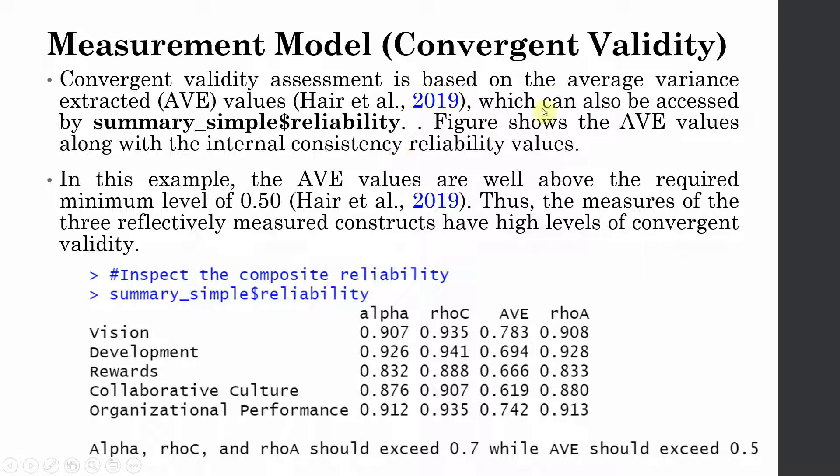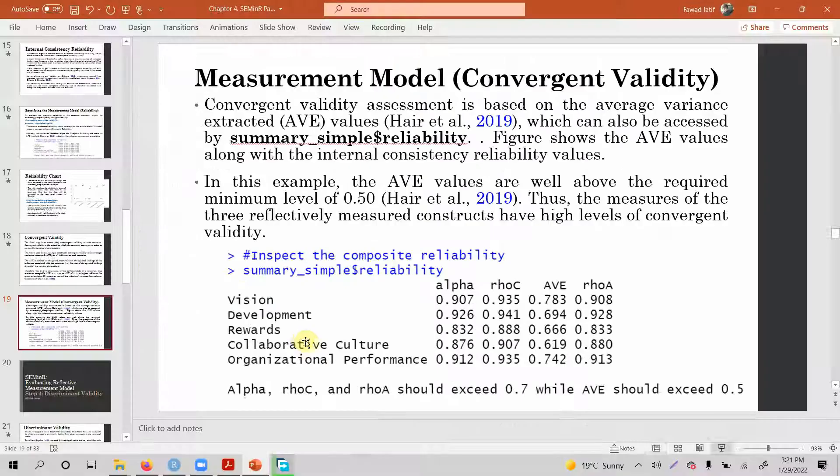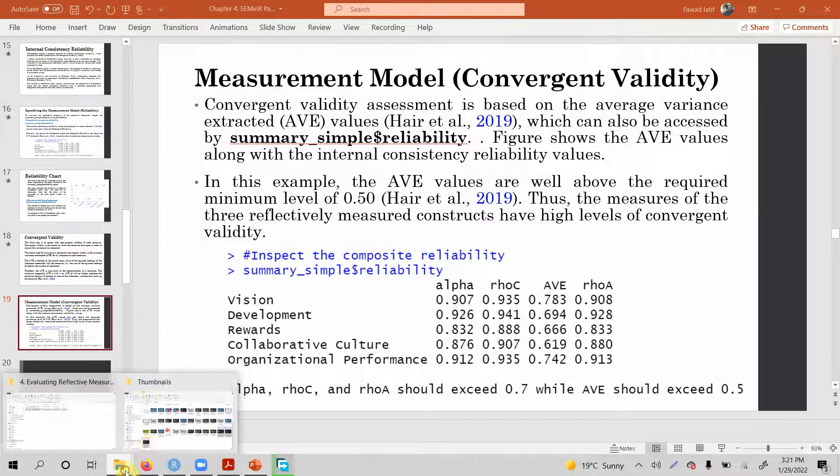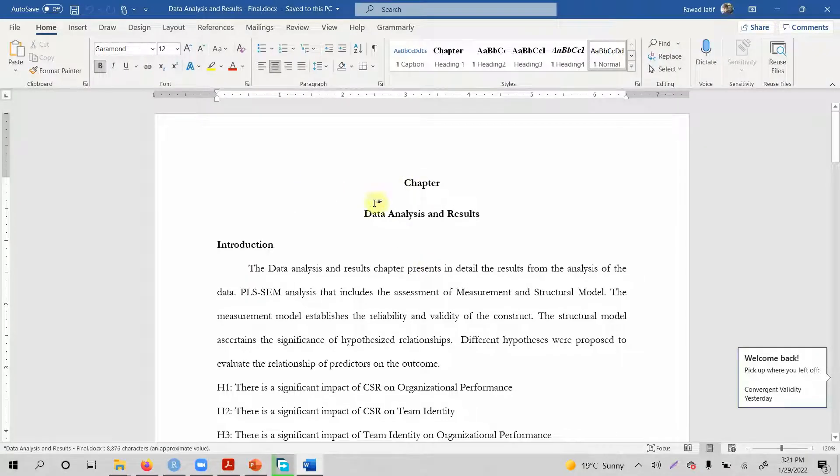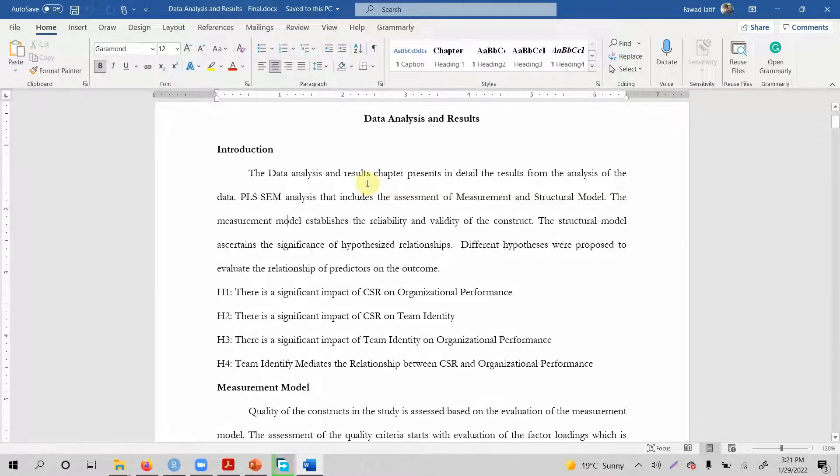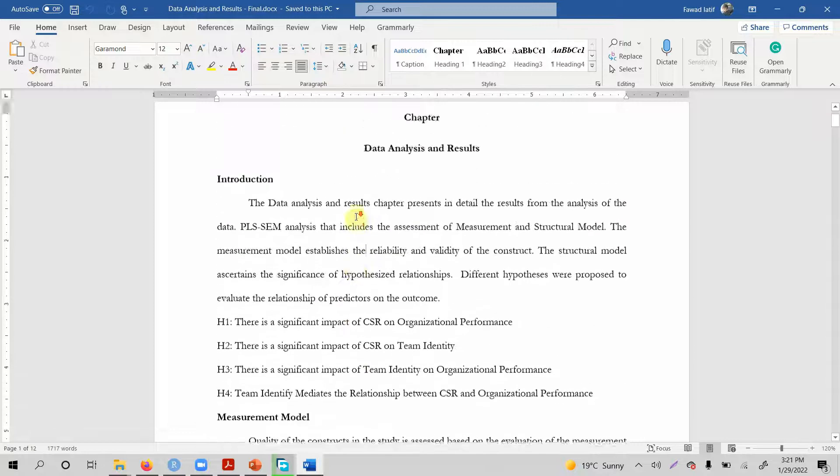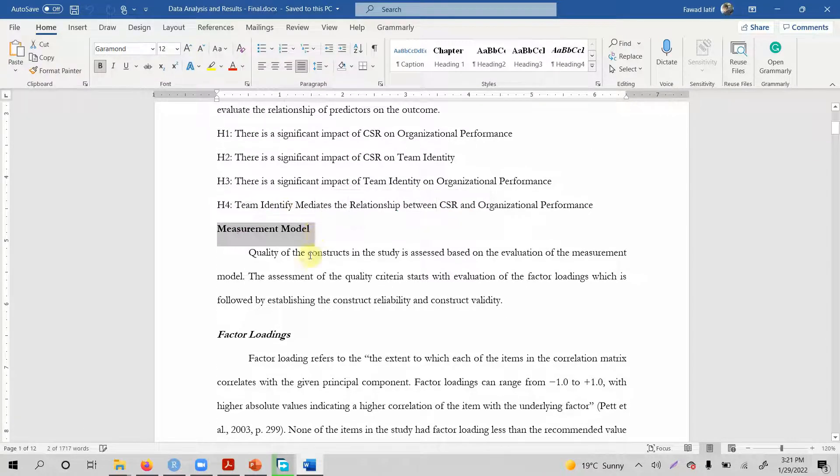Now how do we report this factor loading that we saw earlier, then the indicator loadings, then the construct reliability and now convergent validity? In order to report this, I've got a template here which I'm going to show you now. I'm going to do a detailed video on reporting later, but just a summary, just an introduction for now. So what you do is you start with your measurement model. Then you report your factor loadings. Where are your factor loadings? Here are your loadings here.